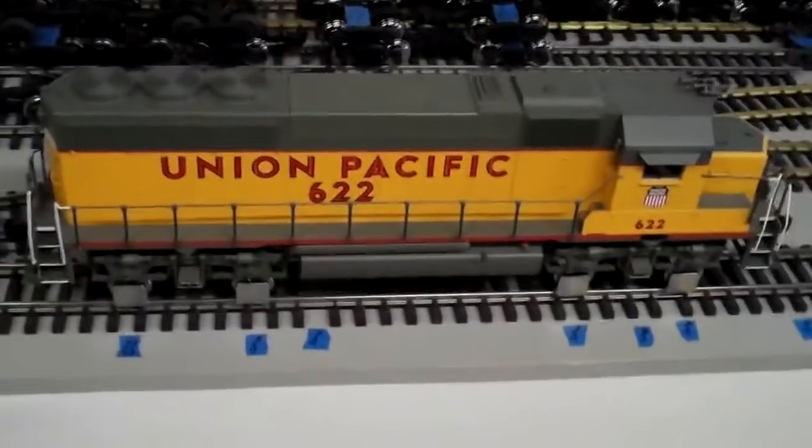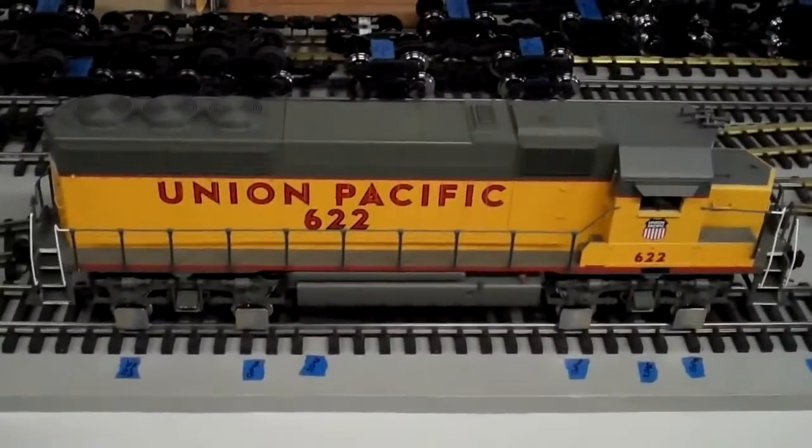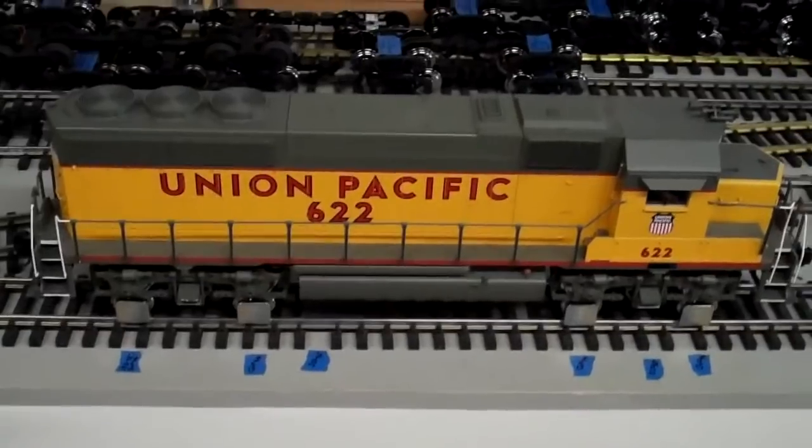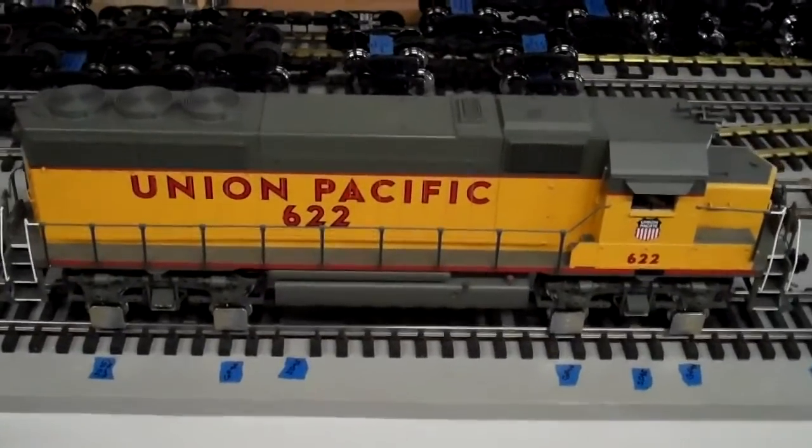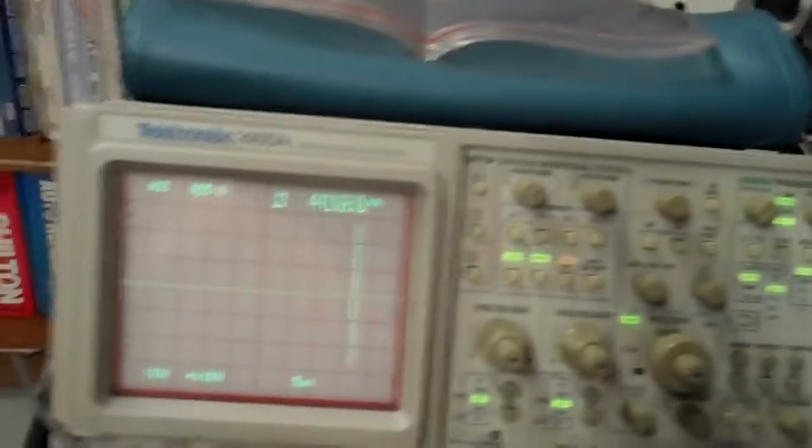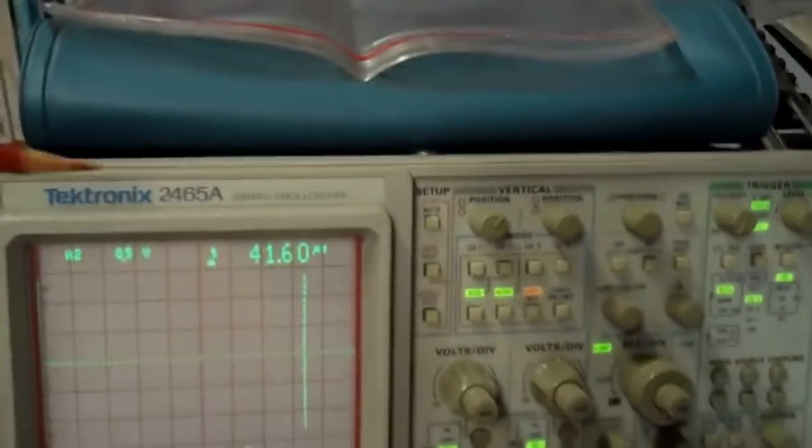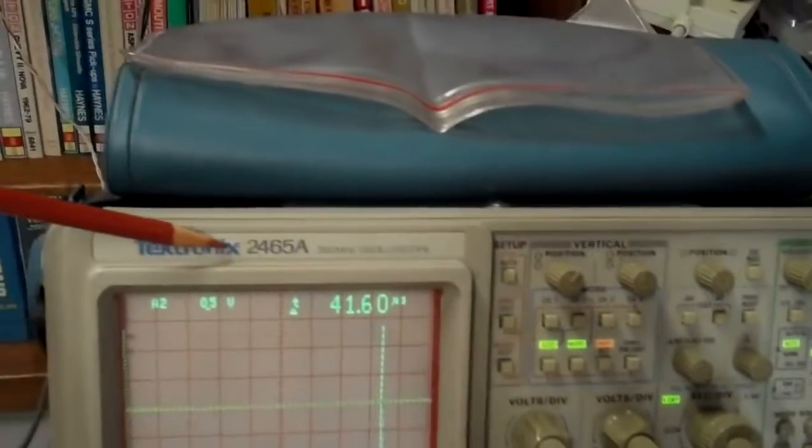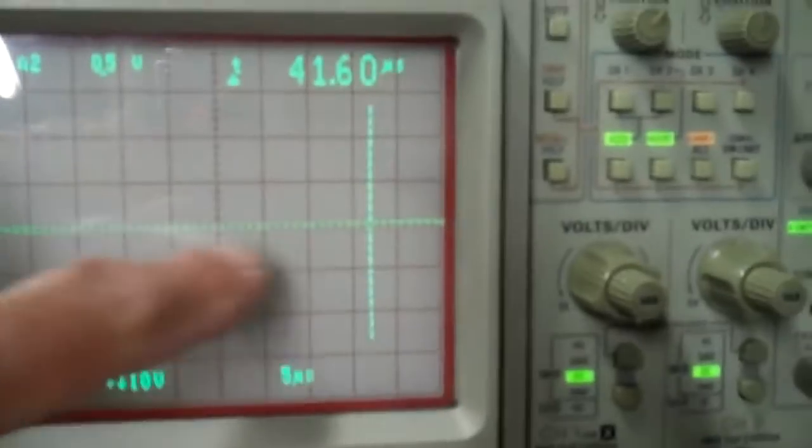And this is the test locomotive Aristocraft GP40 with original motors that haven't particularly failed yet. They're notorious for possibly failing. And this is the oscilloscope I'm using for the test. It's a Tektronix 2465A model. And I have it set for 10 volts per centimeter. And the ground is in the center here.